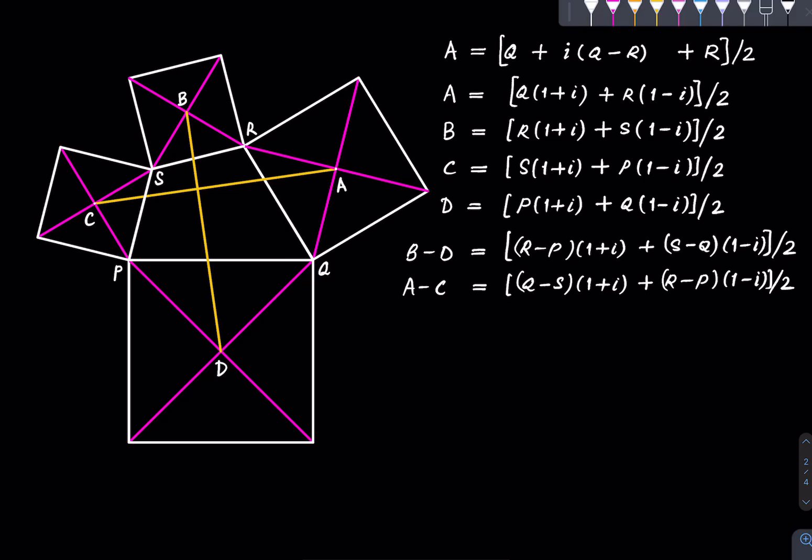So we have found out what is this vector and that vector, and we need to show that they are orthogonal, meaning perpendicular to each other, and equal. Both of those can be shown in one shot, so we just need to show that B minus D is a 90 degree rotation of A minus C. So this is what we need to show, but we just compute what that is.